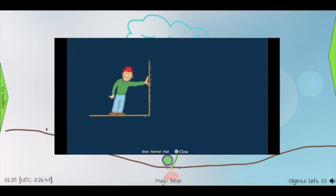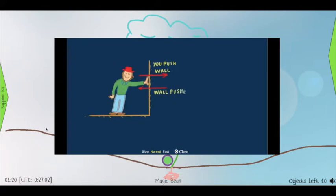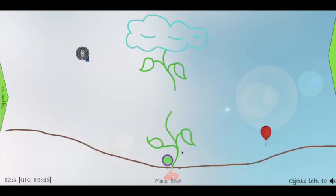When you lean and push against a wall, you exert a force on the wall. You don't fall through the wall because the wall pushes back on you with the same amount of force. You push on wall — action. Wall pushes on you — reaction. Forces only exist in pairs: equal and opposite.